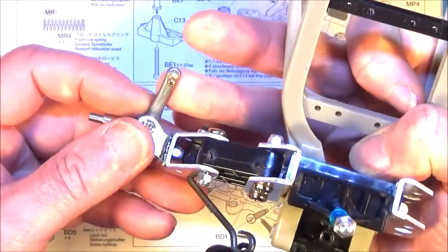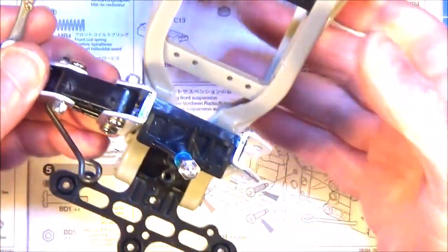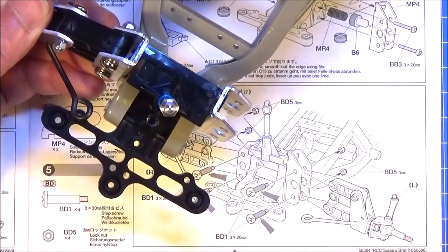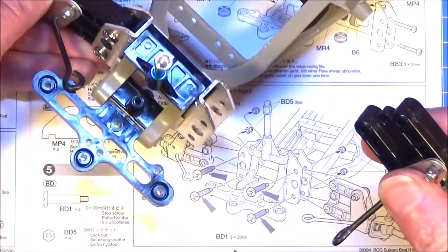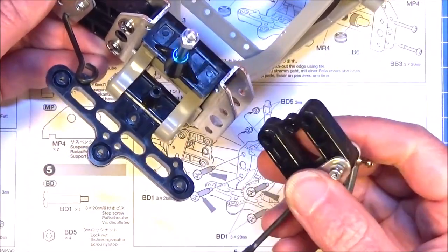Just make sure that you get the one with the arm pointing backwards on both. So for the left one I'll just show you how it goes on. It's very simple, it's just two BD1 step screws that hold it in.